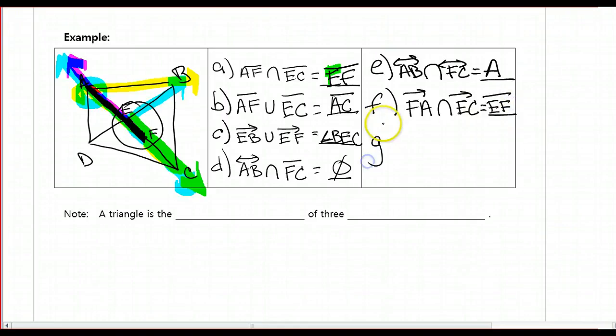And then I'm going to give you one more problem, and I'm going to have you figure that out. You can come to class and tell me the answer. I want ray FA, and I want the union with ray EC. See if you can figure out what that is. And then also see if you can figure out what these two blanks are. A triangle is the blank of three blanks. Write down any questions and make sure you ask me in class.